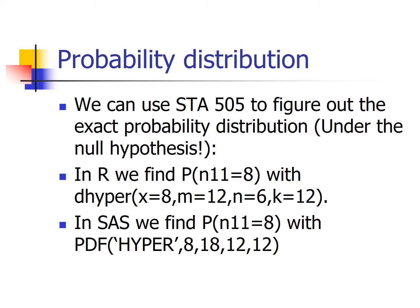Once we know the possible values — 6 through 12 — we can calculate the probability of each. We calculate them knowing that these follow a hypergeometric distribution under our assumptions and the null hypothesis. You can calculate Poisson probabilities in R using the dhyper function — hyper as in hypergeometric, d as in density or distribution. In SAS, use the PDF function with the keyword hyper, embedded within a data step.